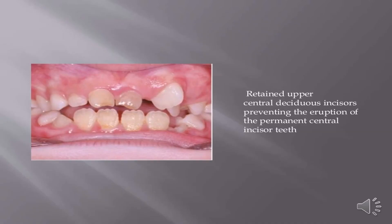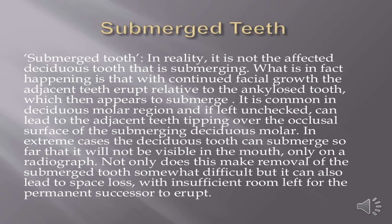Retained upper central deciduous incisors can prevent the eruption of the permanent central incisor teeth. Regarding submerged teeth, it is not the affected deciduous tooth that is actually submerging. What is happening is that with continued facial growth, the adjacent teeth erupt relative to the ankylosed tooth, which then appears to submerge. This is common in the deciduous molar region and, if left unchecked, can lead to adjacent teeth tipping over the occlusal surface of the submerging deciduous molar. Notice how the adjacent teeth are tipping over the submerging upper left second deciduous molar.